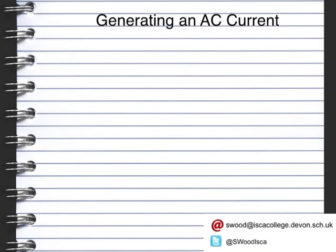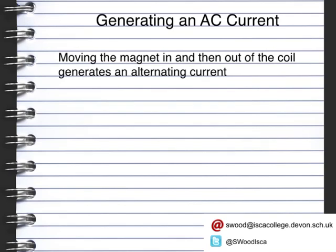How can we generate an alternating current? When we go in and then out, we change the direction of the current, and that means we're generating an alternating current. The voltage will depend on the rate at which the field changes — a quicker movement can cause a higher voltage.